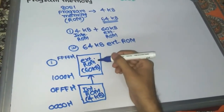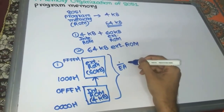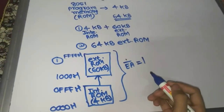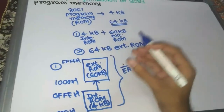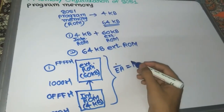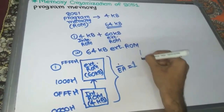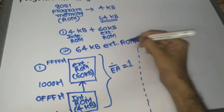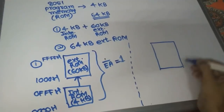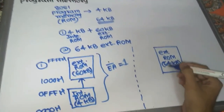To use this combination, the External Access (EA bar) pin — which we saw in the 8051 pin diagram — must be set to 1. If EA bar is connected to VCC, you get this combination. For the second option, you directly use 64KB of external ROM only, without using the internal 4KB ROM at all.